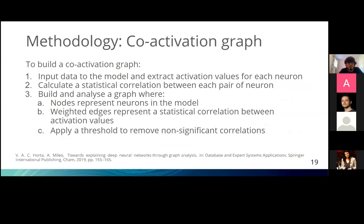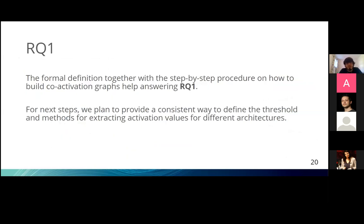This step-by-step procedure is an initial answer to research question one — we provided a way to build this graph. As a next step, we are planning to provide a consistent way to define the threshold and different methods for extracting activation values for different layer types. Currently it works for fully connected and convolutional layers, but we may need to handle other types of layers.